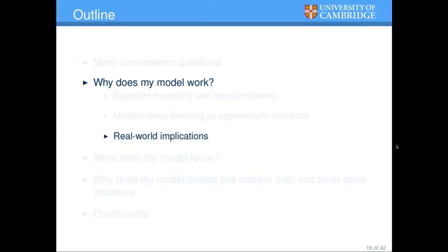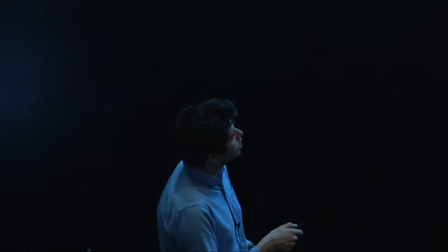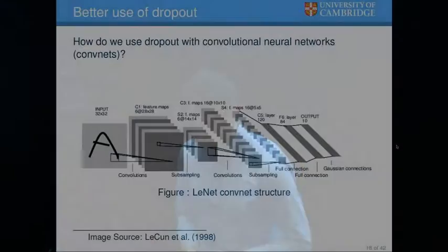Theory is worth nothing if it can't be used to make better code. I'm going to show results of using these ideas to make better use of current tools and develop new ones. We can also use these results to understand model structure selection — that's related to what I mentioned about Gaussian processes — and use Bayesian statistics literature to understand why we use different model architectures. We're going to talk about how we can use dropout in convolutional neural networks.